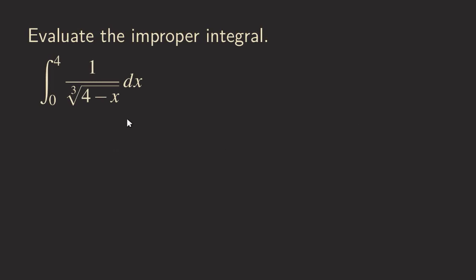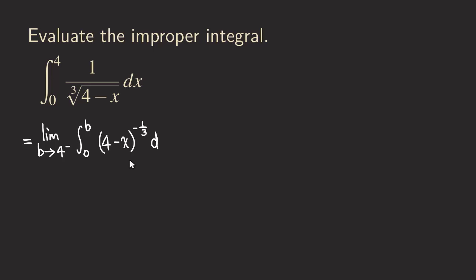Let's look at another improper integral. This time we have an integrand that's not continuous at the upper limit, which is four. We are again going to write it as a limit of a definite integral, with the integral from zero to b. I also want to rewrite the integrand in power form, writing it as four minus x to the negative one-third power, because it's in the denominator giving us a negative exponent, and there's a cube root giving us the one-third power.